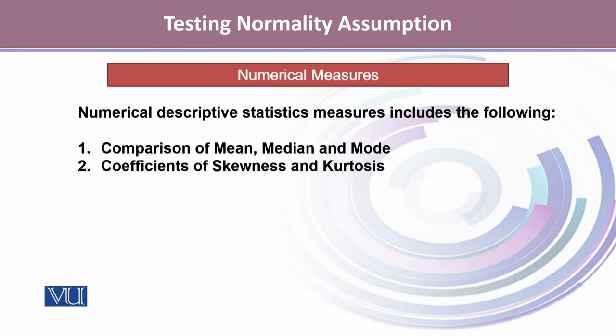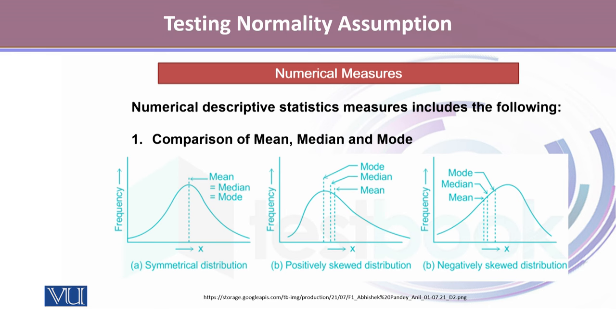Other types of measures are numerical measures that help us to test for the normality assumption. One can make a comparison between mean, median, and mode, or one can compare the coefficient of skewness and kurtosis. To make a comparison of mean, median, and mode, we understand that if the distribution is symmetrical, all three measures — mean, median, and mode — will be equal, which is a strong hint that the distribution is likely to be normal.